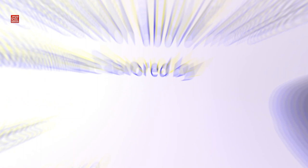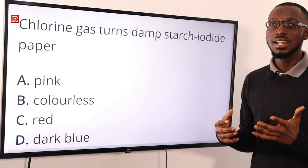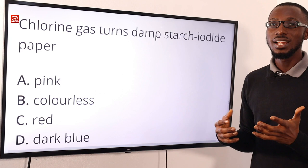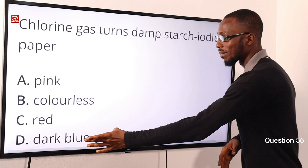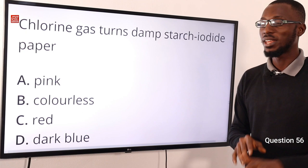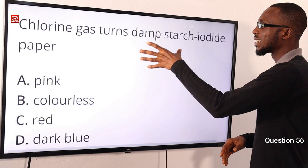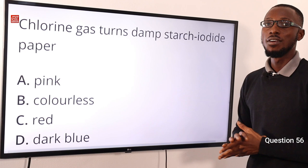You can access our solution providers on the MySchool website — click the link in the description. Question 56: Chlorine gas turns damp starch iodide paper to dark blue. Chlorine displaces iodine from potassium iodide, and the iodine then turns the damp starch paper dark blue. The correct option is option D for dark blue.